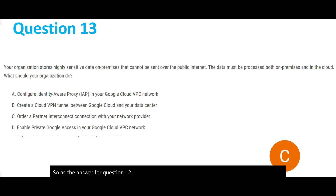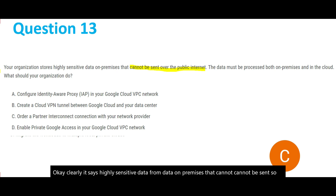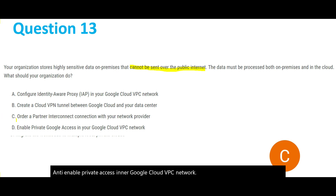Let's move on to question 13. Your organization stores highly sensitive data on premises that cannot be sent over the public internet. That data must be processed both on premises and in the cloud. What should your organization do? The key phrase here is: cannot be sent over the public internet.